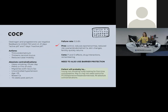Absolute contraindications to the COCP include heavy smoking, personal or family history of unprovoked clots, migraines with neurological symptoms, age over 35, breast cancer, or less than six weeks postpartum. Pros include cycle control, reduced dysmenorrhoea. Cons include progesterone and oestrogen side effects, drug interactions, and needing to remember it daily. In an exam, the COCP patient is typically a young non-smoker without recent pregnancy, seeking first-time contraception, possibly with PCOS, painful periods, or endometriosis — and no absolute contraindications.